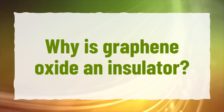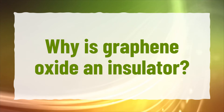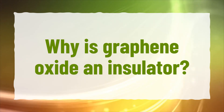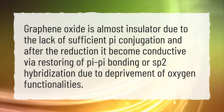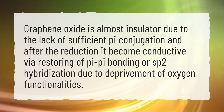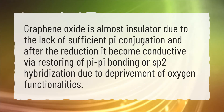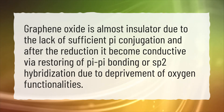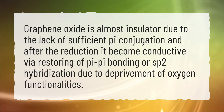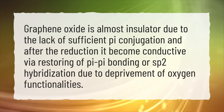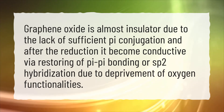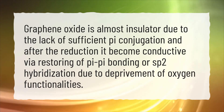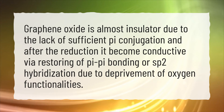Why is graphene oxide an insulator? Graphene oxide is almost an insulator due to the lack of sufficient pi conjugation. After reduction, it becomes conductive via restoring of pi-pi bonding or sp2 hybridization, due to removal of oxygen functionalities.